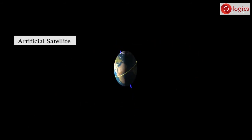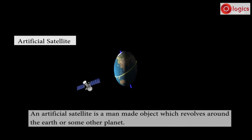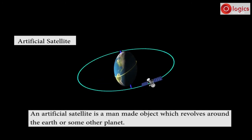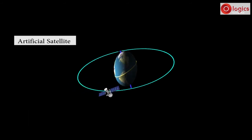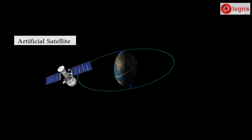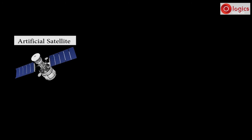What is artificial satellite? An artificial satellite is a man-made object which revolves around the earth, or some other planet. What is the purpose of man-made satellites, that is artificial satellite?